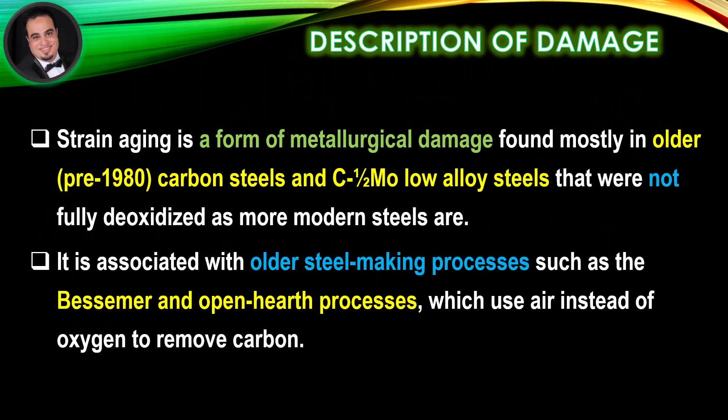Description of damage. Strain aging is a form of metallurgical damage found mostly in older carbon steels and carbon-½-molybdenum low-alloy steels that were not fully deoxidized, as more modern steels are.